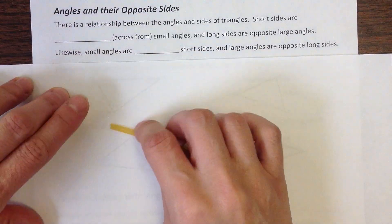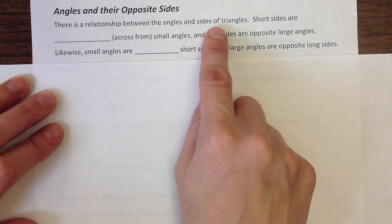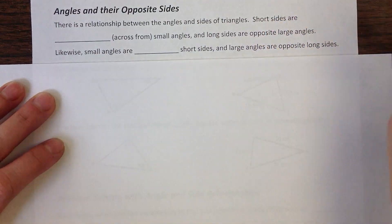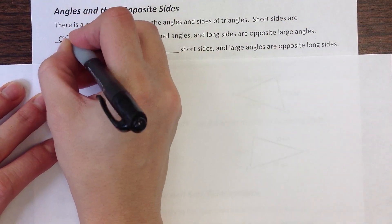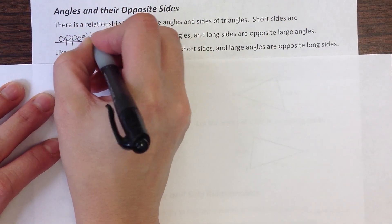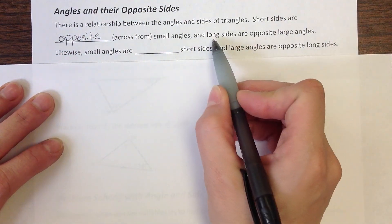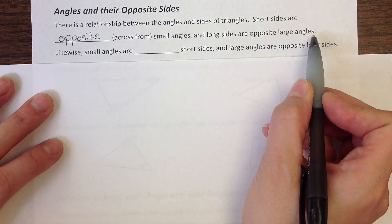So there's a relationship between angles and the sides of triangles. Short sides are opposite - opposite means across from - short sides are opposite small angles, and long sides are opposite large angles.